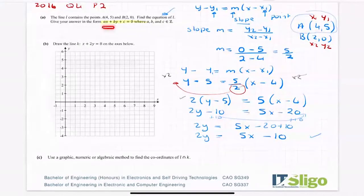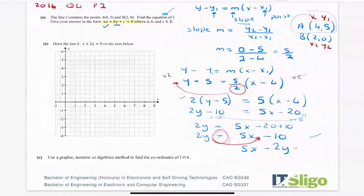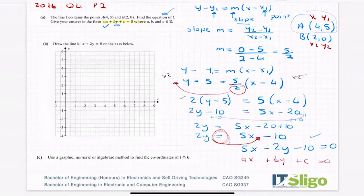Then I go to the next part which tells me to write it in the form ax plus by plus c equals zero. The x's are on the right and they're positive, so bring them over — when a term moves over the equals sign it changes sign. So: 5x first, then minus 2y because it changed side, minus 10 equals zero. That is now in the form ax plus by plus c equals zero, and that is the answer to part a.